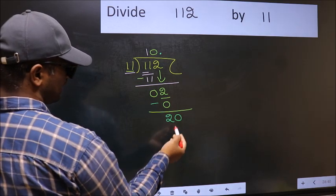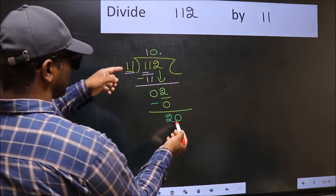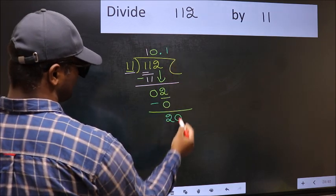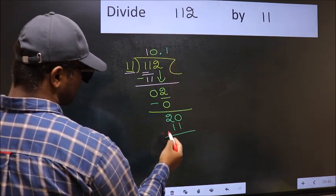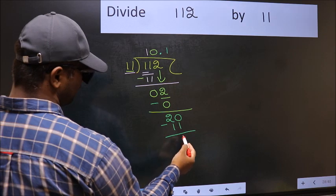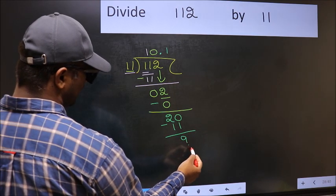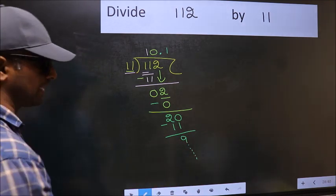So now you can put dot and take 0. So 20. A number close to 20 in the 11 table is 11 once, 11. Now you should subtract. We get 9. And continue the division. I am not doing that.